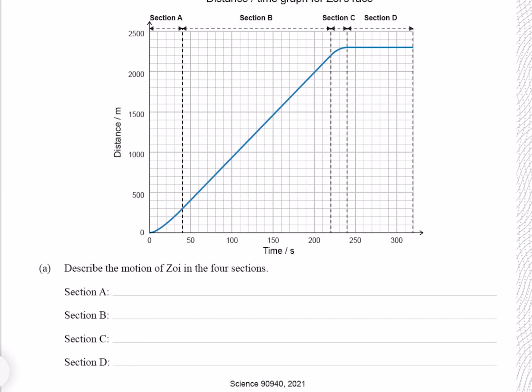The key thing to remember is that on a distance-time graph the slope is the speed. In section A the slope is curved, starting out gentle and getting steeper and steeper. The fact that the slope is getting steeper means the speed is increasing, which means Zoe is accelerating. In section B the slope is continuous and does not change for the entire section. If the slope isn't changing, the speed isn't changing. In section C the slope starts off relatively steep and then gets gentler. If the slope is decreasing, the speed is decreasing, which means Zoe is decelerating. In section D the line is flat, which means the slope is zero. If the slope is zero, the speed is zero, which means Zoe is stationary.